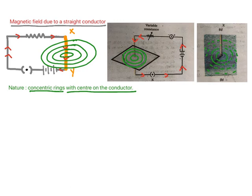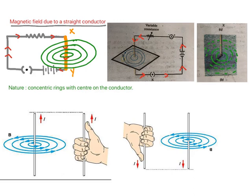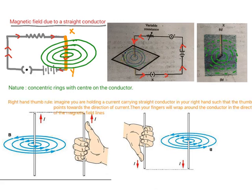We will now learn the magnitude and direction of this field. Since the magnetic field lines are circles, they could have two directions — clockwise or anticlockwise. The direction is given by a rule called the Right Hand Thumb Rule.